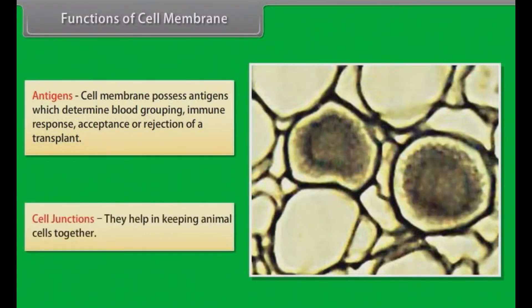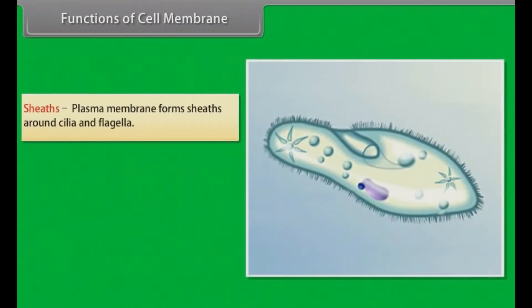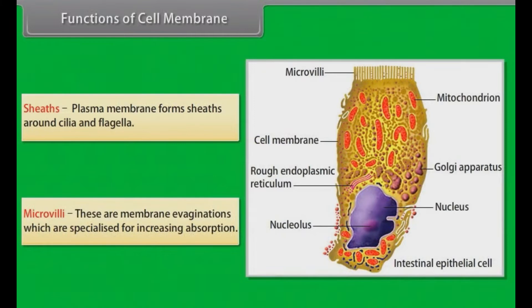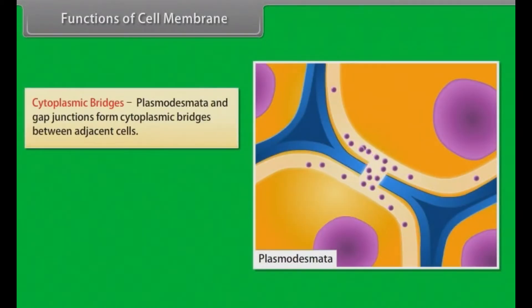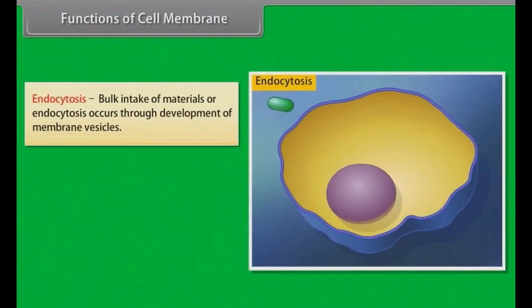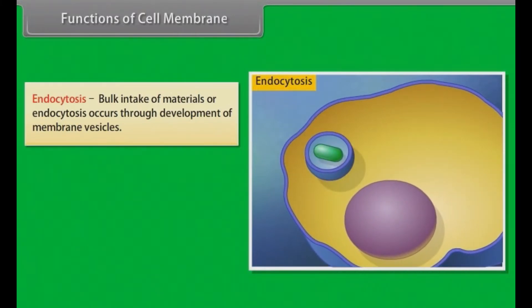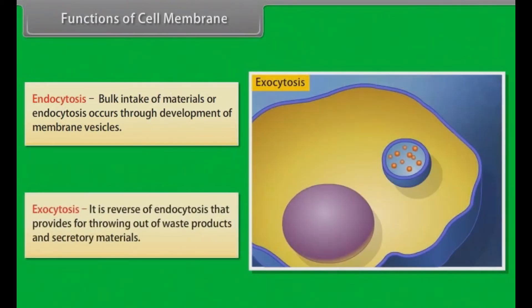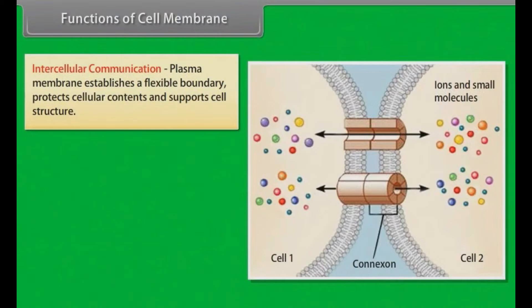Cell junctions: they help in keeping animal cells together. Sheets: the plasma membrane forms sheets around cilia and flagella. Microvilli: these are membrane evaginations specialized for increasing absorption. Cytoplasmic bridges: plasmodesmata and gap junctions form cytoplasmic bridges between adjacent cells. Osmosis: it is caused by the presence of special water channels in the membranes. Endocytosis: bulk intake of materials or endocytosis occurs through development of membrane vesicles.